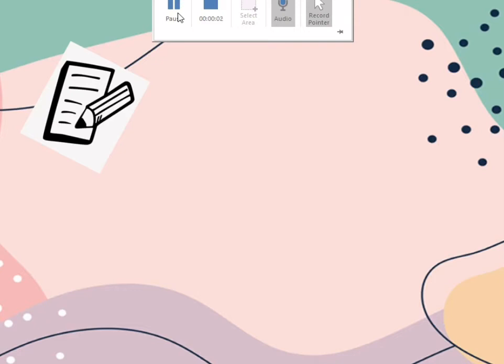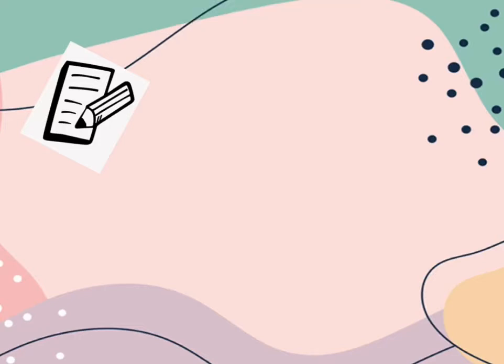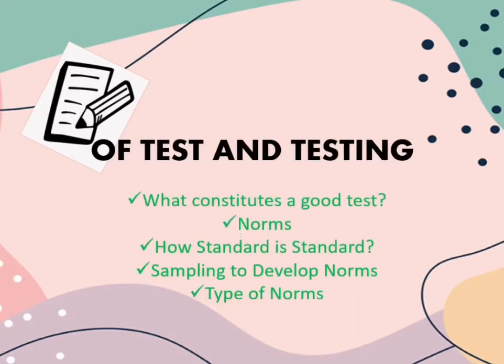For today, I will be discussing specific topics under Chapter 4. The topics include the following: what constitutes a good test, norms, how standard is standard, sampling to develop norms, and the type of norms.